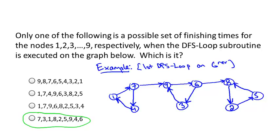In the main loop we start from node nine. From nine, there's only one outgoing arc, so we go to six. From six we can go to three or to eight — to generate this fourth set of finishing times, I'll assume we go to three first. From three, the only outgoing arc goes to nine, which is already explored, so we skip it. Three has no more outgoing arcs, so three is the first node to finish. We increment T to one and set the finishing time of three to one, just as in the example.